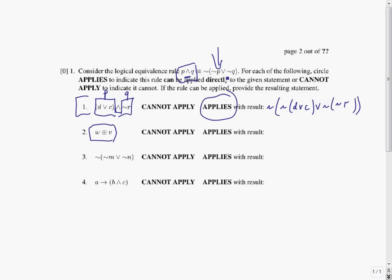To match up with the right-hand side of the rule, we're going to need a negation on the outside and we're going to need this OR on the inside and various other things. W XOR V doesn't have any of those. So we're not going to be able to apply the rule to this.